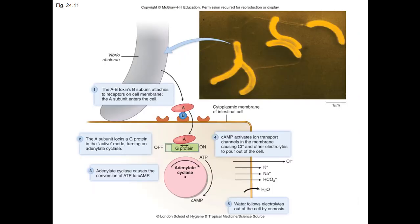The AB toxin causes excessive secretion of water and electrolytes by the intestinal epithelium. The B unit attaches to a cell membrane receptor, causing the A subunit to be brought inside. This A subunit turns a G protein into an active mode and fires up adenylate cyclase, which converts ATP into cyclic AMP. This basically turns the cells into a massive pump, secreting chloride ions, sodium ions, potassium ions, and bicarbonate ions. Water follows the electrolytes out by osmosis, resulting in tremendous fluid secretion from the large intestine.